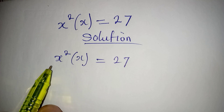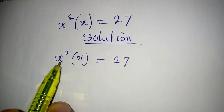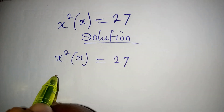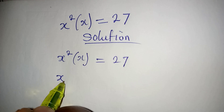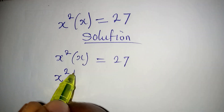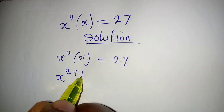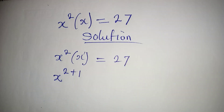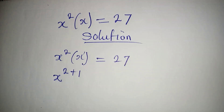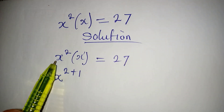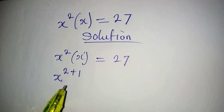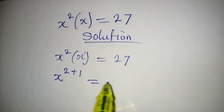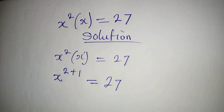So from here, let's multiply these two — we'll have x to the power of 2 plus 1, because this x has an invisible power of 1. So pick one of the bases and add the powers. This will now be equal to 27.